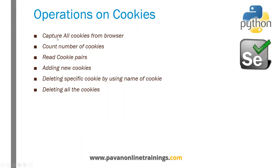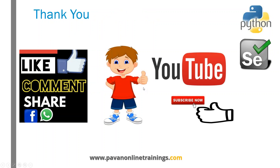So this is how we work with cookies. We have seen how to capture all the cookies from the browser, how to count the number of cookies, reading cookie key-value pairs, adding a new cookie, deleting a specific cookie by specifying the name, and also deleting all the cookies from the browser. That's all for this video. Thanks for watching. Please subscribe to my channel to get more updates on this. Thank you.